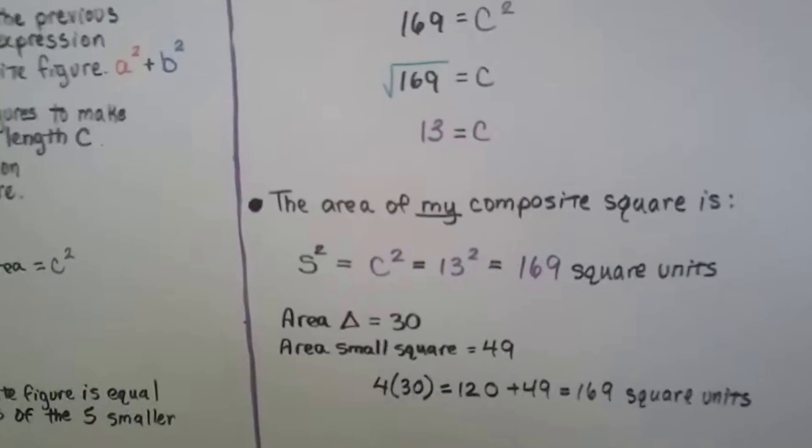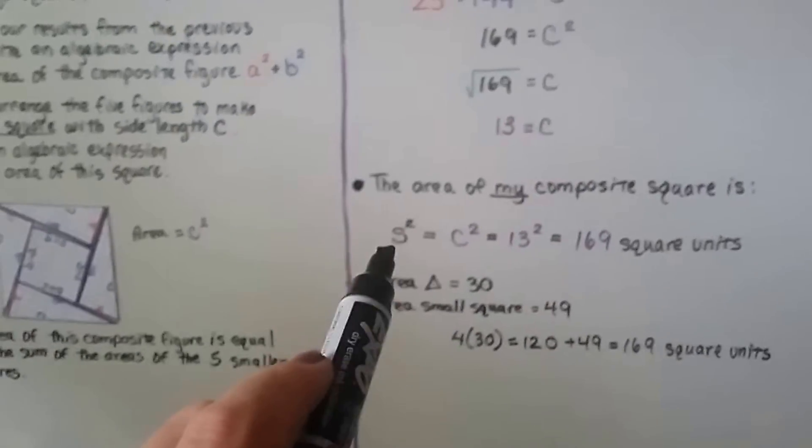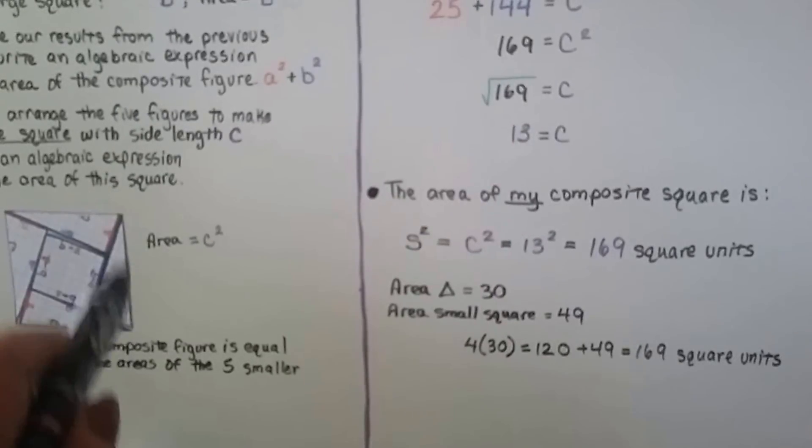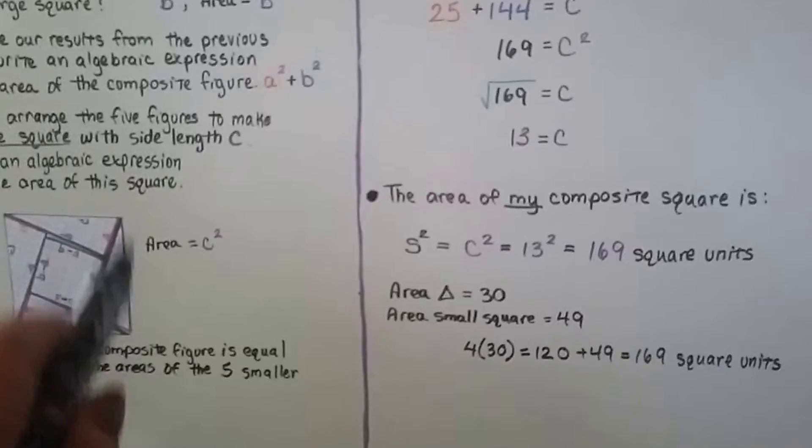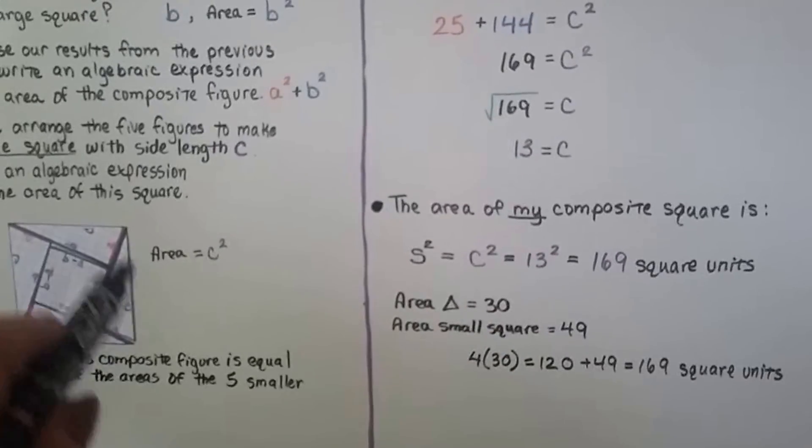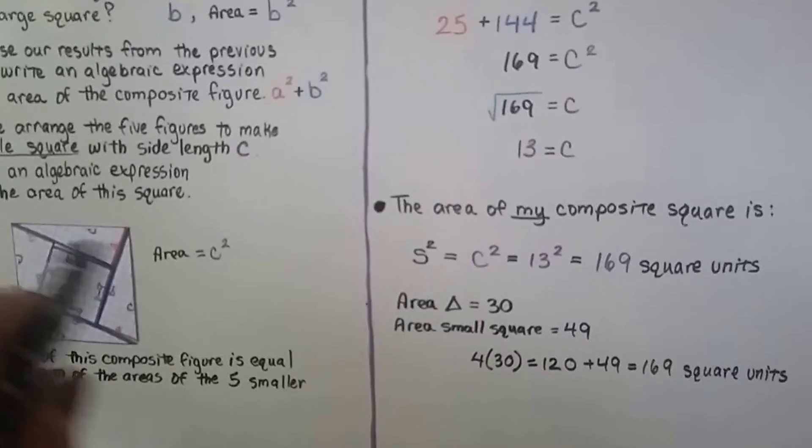So the area of my composite square would be side squared, right? So it would be c squared. This is my hypotenuse, that's 13, see? So we could do 13 squared, which is 169 square units. That's the area of all my little pieces here.